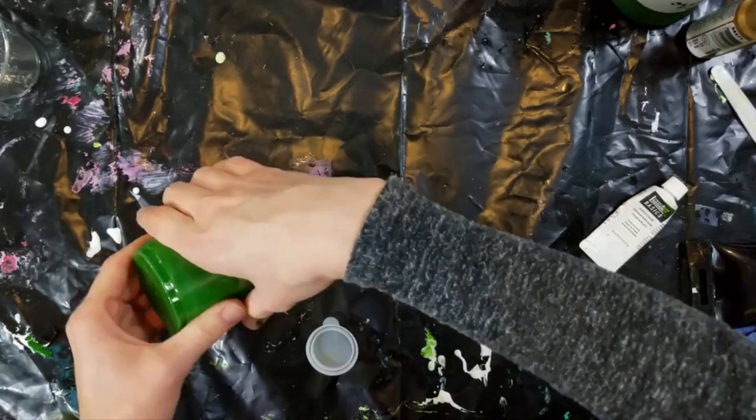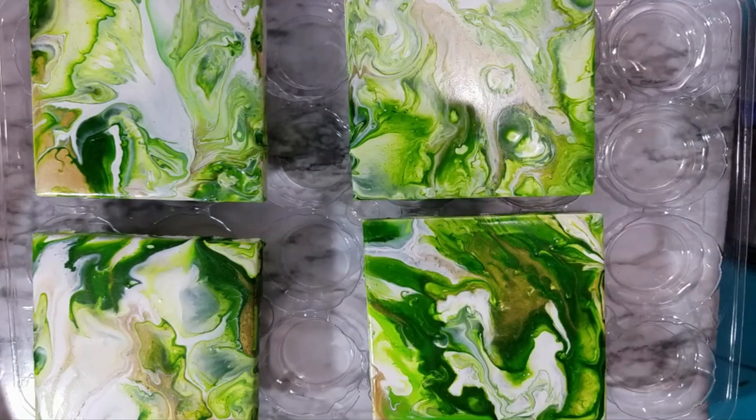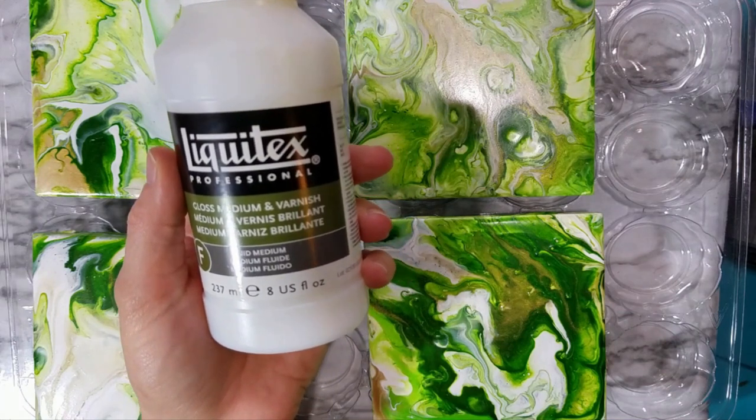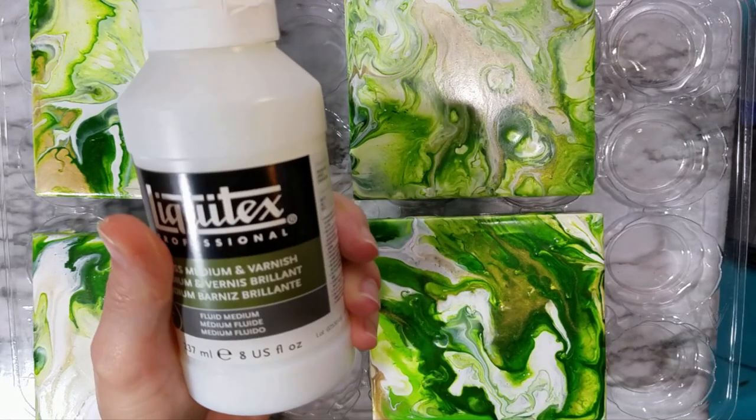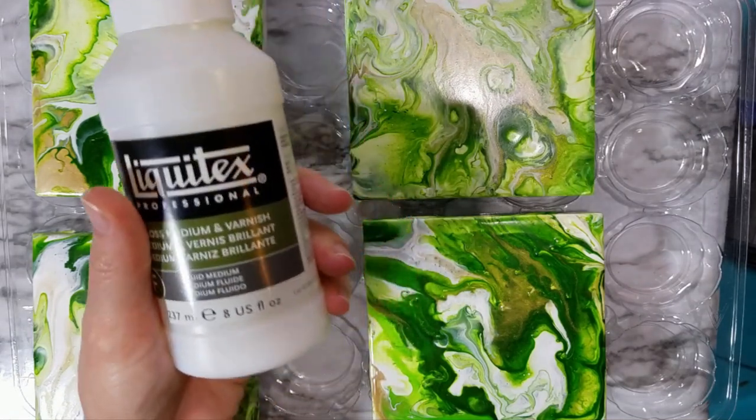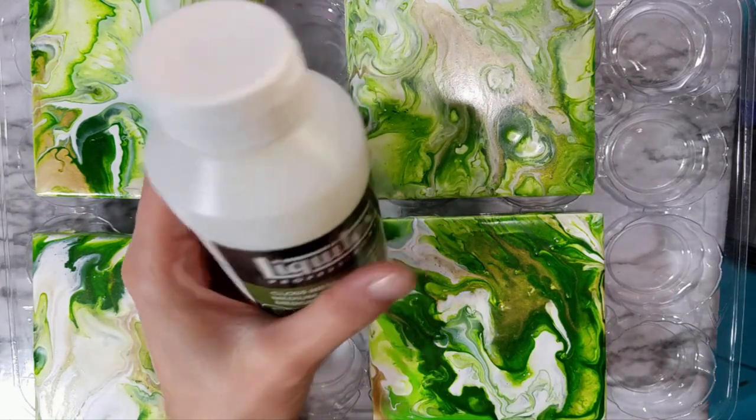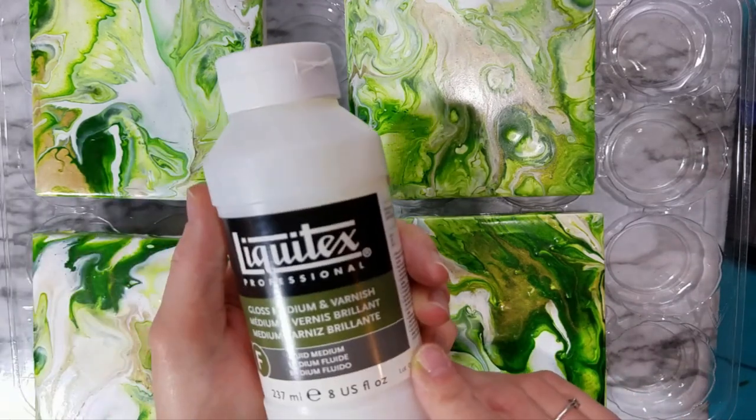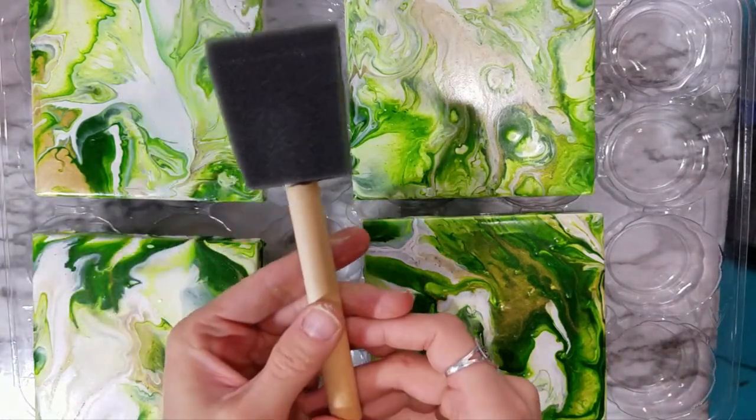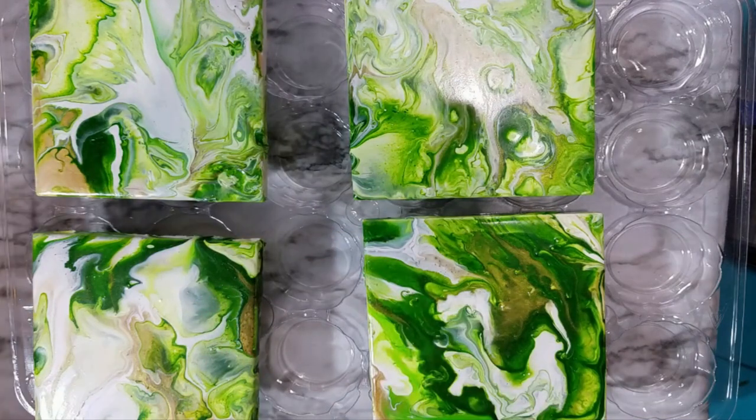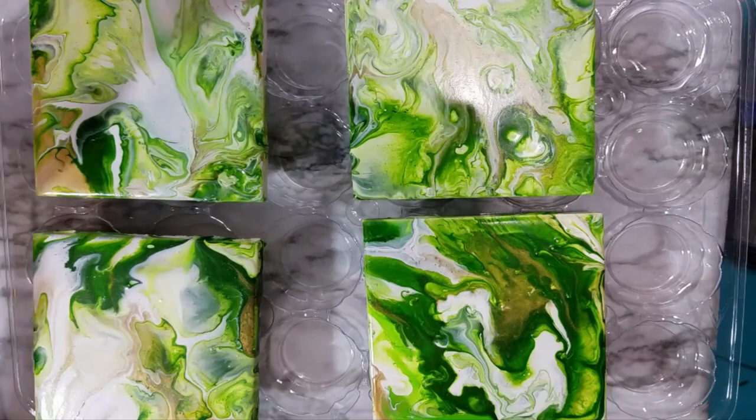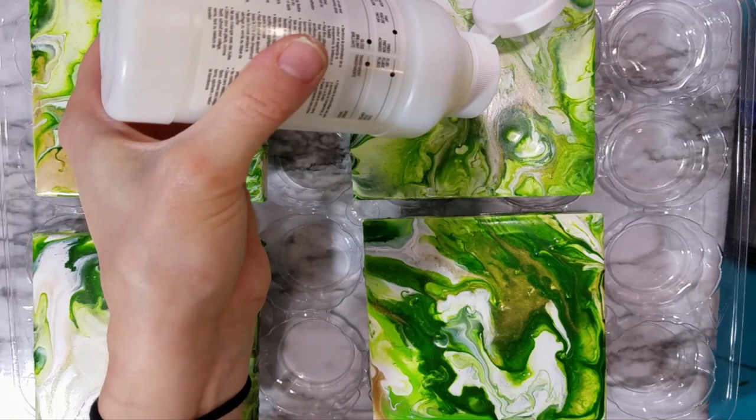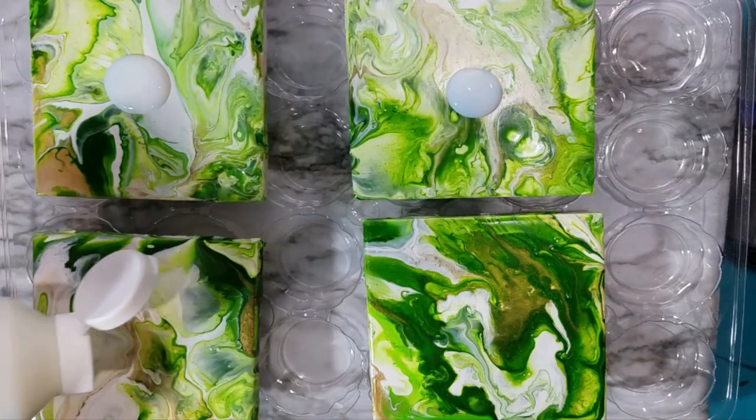Okay, so now to varnish these I'm actually going to use the Liquitex professional gloss medium and varnish. This goes really well with the Liquitex pouring medium that I use and I also use some of the Liquitex basics in this. All of the Liquitex products are made to work with one another so that's why I chose this. I'm just going to use a sponge brush to apply this and this is actually going to be my first layer of probably about three. I usually do about three layers.